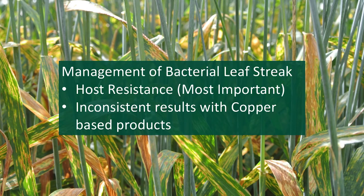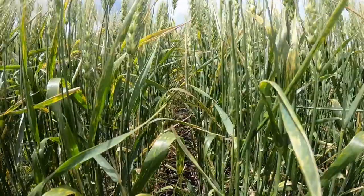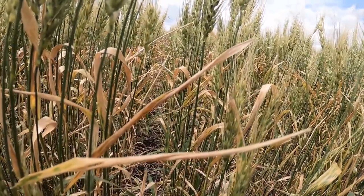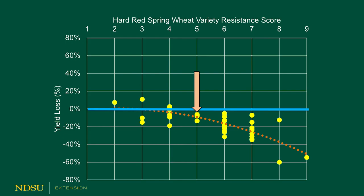Regardless of how we're managing or looking at the disease, management is very important. The two primary tools that we have been receiving the most questions on are host resistance and the use of a copper-based product. Host resistance is our most important management tool, as we have a wide range of variety susceptibility. Some varieties can be quite resistant and others quite susceptible, leading to extensive crop loss and greater economic losses. The best way to assess variety susceptibility is to consult the variety selection guides produced at NDSU and the University of Minnesota. We have found that any variety rated a five or greater is when you start seeing extensive yield loss, so we tend to recommend varieties rated five or less when making a selection for bacterial leaf streak.